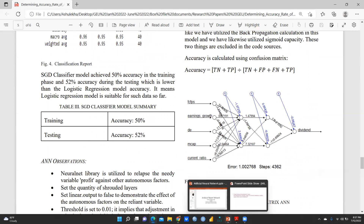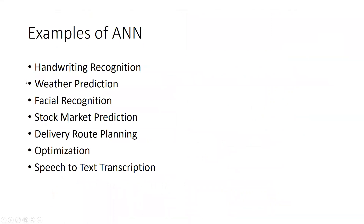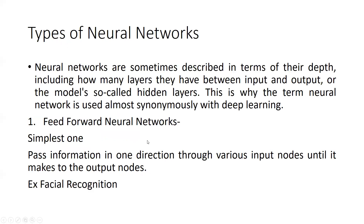Now let's look at where we use artificial neural networks. Common applications include handwritten recognition, weather prediction, facial recognition, stock market prediction, delivery route planning and optimization, and speech-to-text transcription.